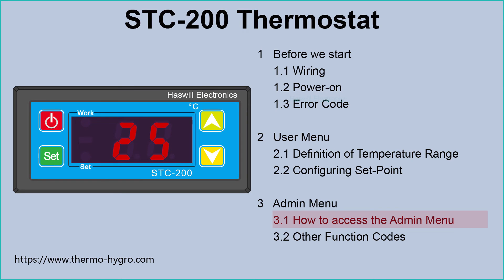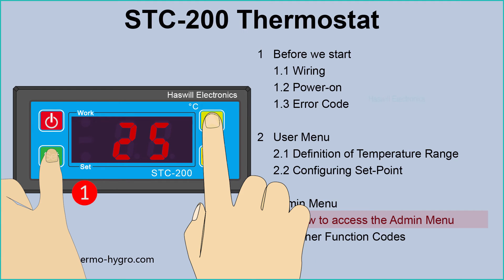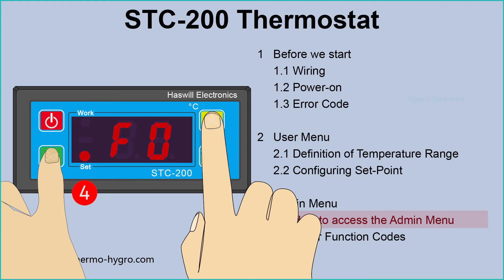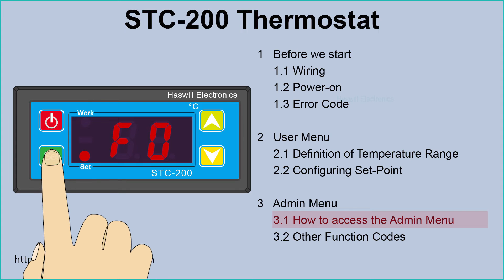You must enter the administrator menu to modify the return difference value. Hold the set key and the up key at the same time for 4 seconds to enter the function code interface. You will see F0 and the set light is on — now you have accessed the admin interface. F0 is the return difference. Step 1: press the set key to check the existing value.